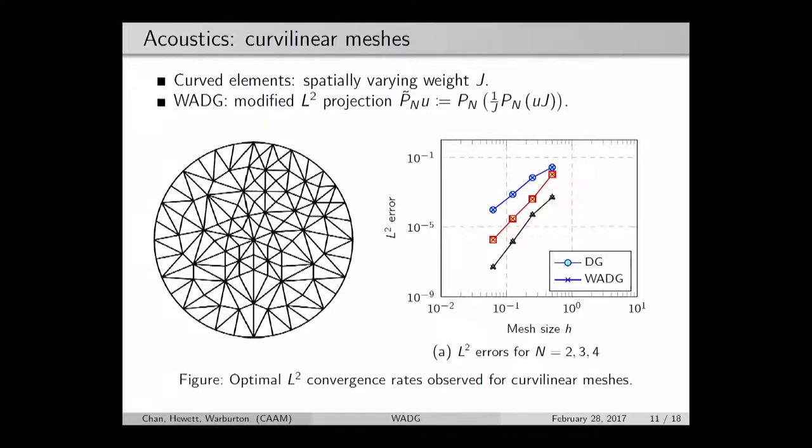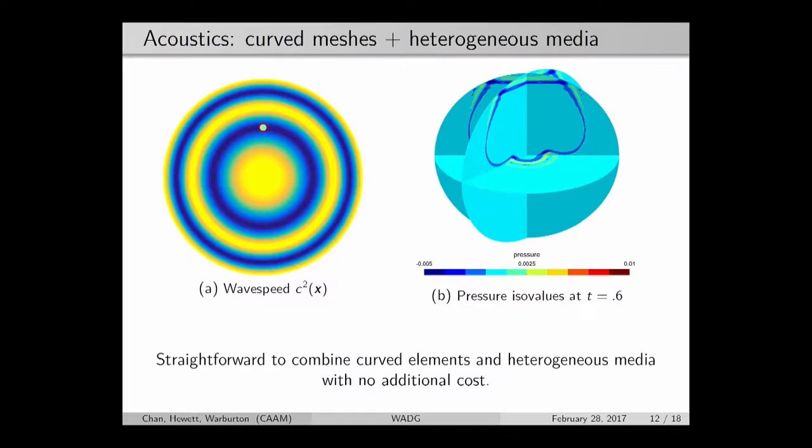The reason I like our implementation is also if we use curvilinear meshes and want to incorporate heterogeneous media on top of that, we can do so at absolutely no additional cost. This is an example of a radial wave field which is smoothly varying throughout a domain and a curvilinear mesh, along with a wave propagated from a Gaussian pulse about in the middle.